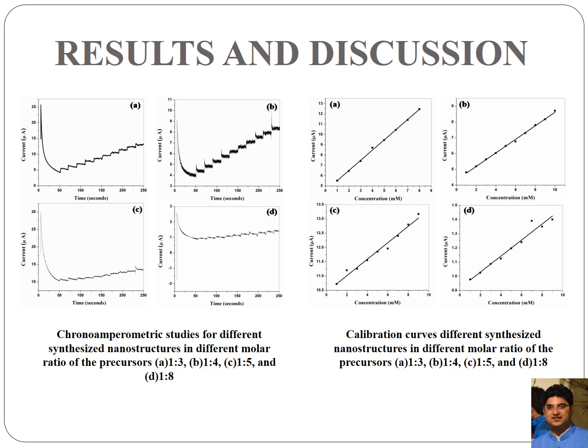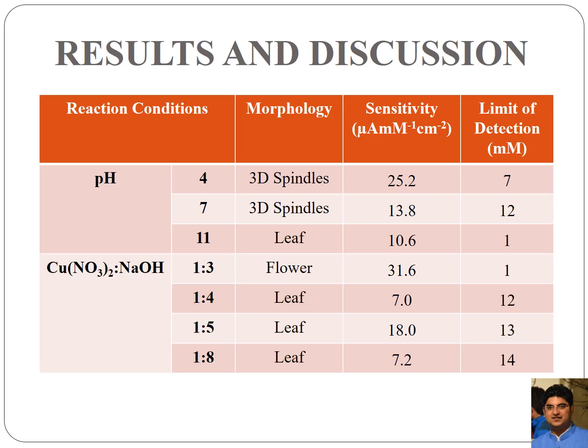Chronoamperometric studies were also done to evaluate the glucose sensing activity of the synthesized copper oxide nanostructures. From the curves, as glucose is added the current response increases, and the corresponding calibration curve shows a linear increase in current. The copper oxide nanostructures had good linear behavior, with current increasing linearly on every subsequent addition of glucose. The flower-like morphology showed the best sensitivity towards glucose.